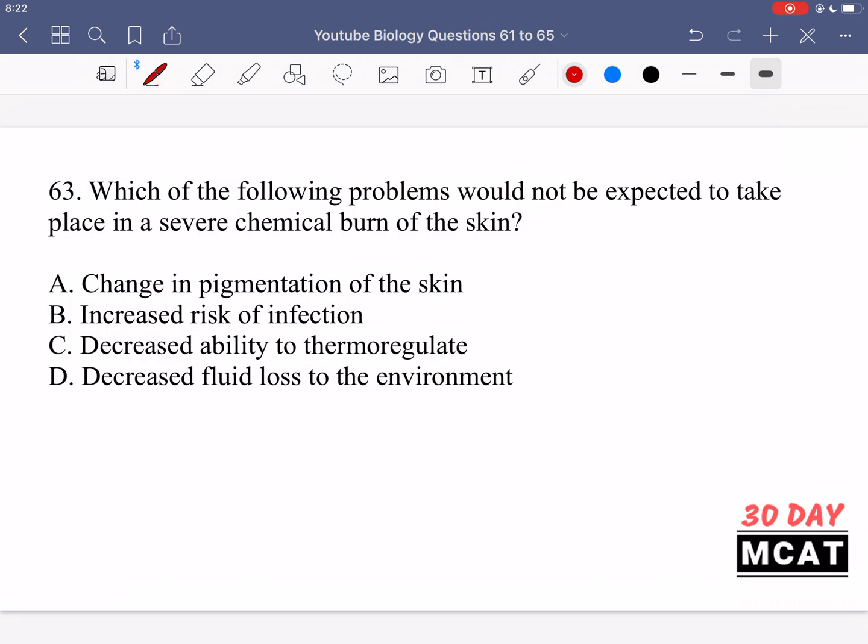In question 63 we're asked which of the following problems would not be expected to take place in a severe chemical burn of the skin. So you have a severe chemical burn in the skin, which would not be expected. Three of these options are expected and one is not. For this you need to know the functions that the skin plays as an organ.